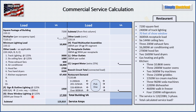Next is show window lighting. We have 70 feet of show window, so we take 70 feet times 200 VA per linear foot, which gives us 14,000 VA. Times 125% because it's continuous — that's 17,500 VA.